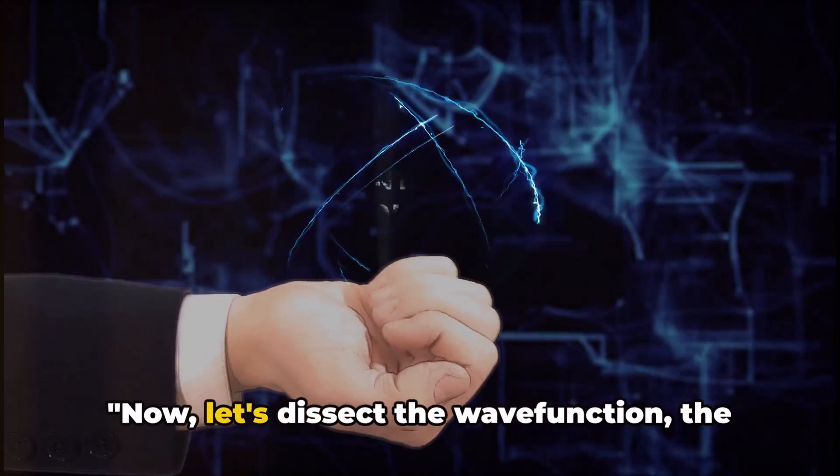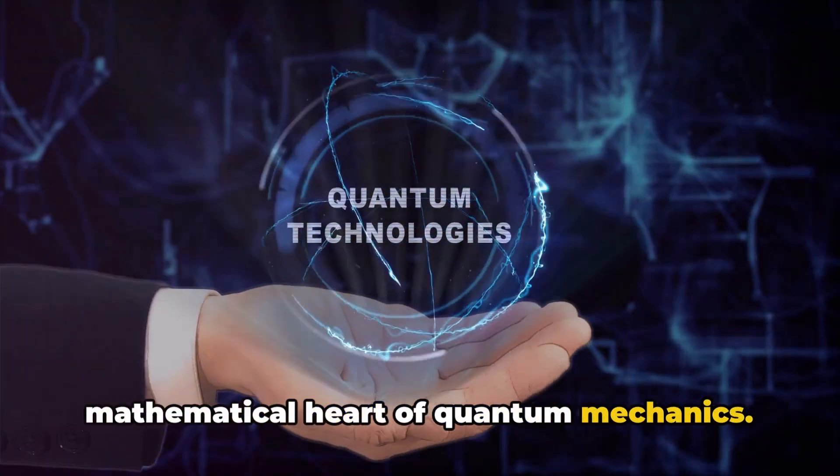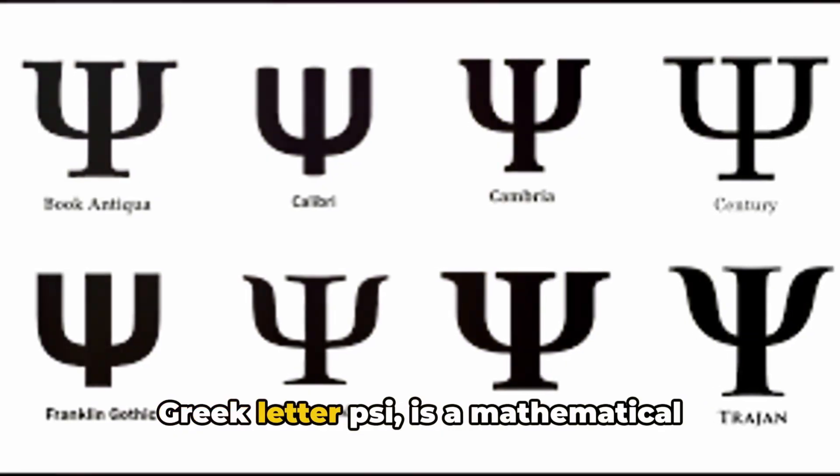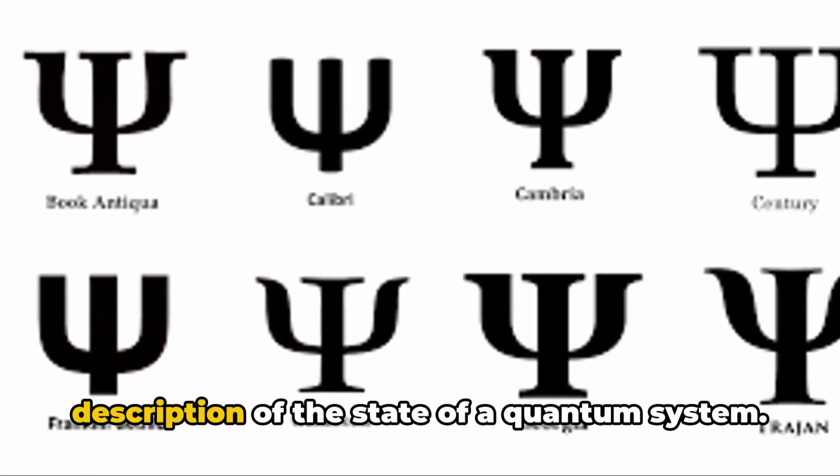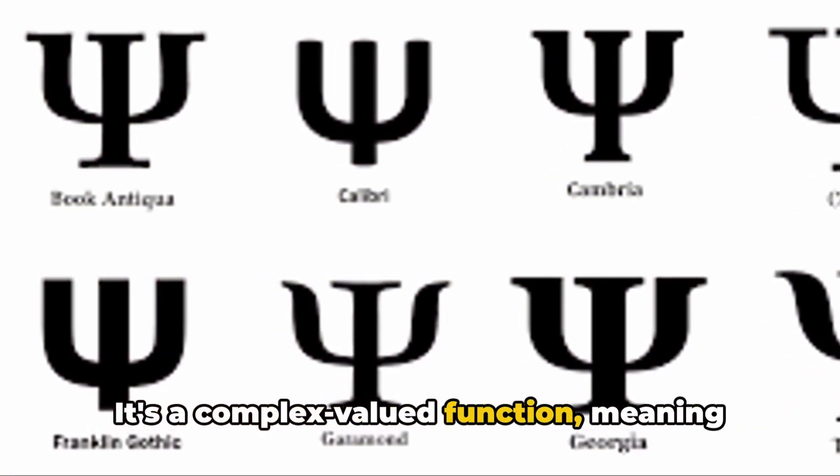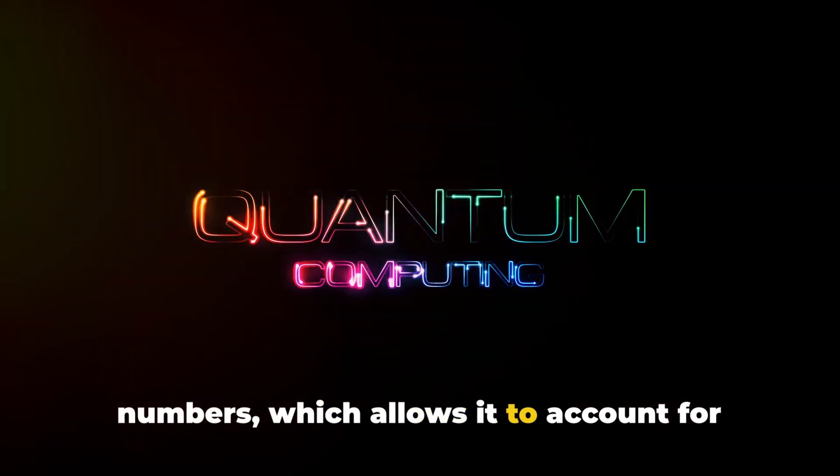Now let's dissect the wave function, the mathematical heart of quantum mechanics. The wave function, often denoted by the Greek letter psi, is a mathematical description of the state of a quantum system. It's a complex-valued function, meaning it incorporates both real and imaginary numbers, which allows it to account for the peculiarities of quantum phenomena.